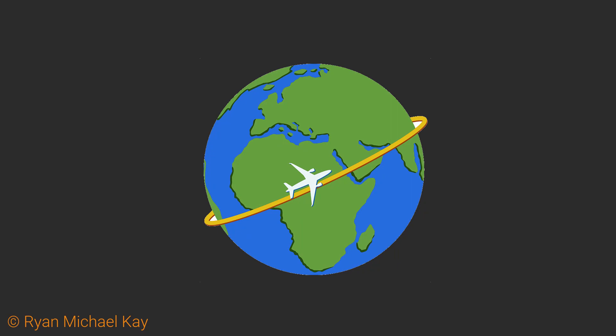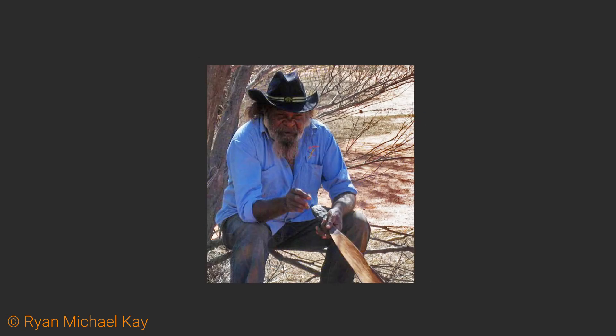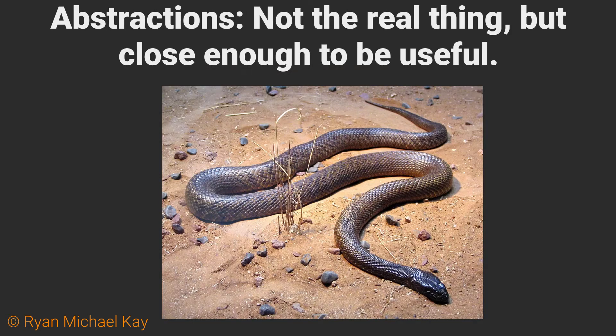Suppose you are traveling to an area and you have heard that it is a habitat of a particularly deadly kind of snake. Not wanting to take unnecessary risks, you wish to learn more about the snake. One way to become capable of identifying this snake would be to hire a guide to help you find one. However, while supporting the local economy is great, you could also just search for some images of the snake online. An image of a snake is an abstraction — it has enough details about a part of reality, in this case a snake, to give you information that can save your life.